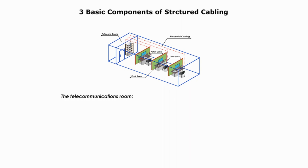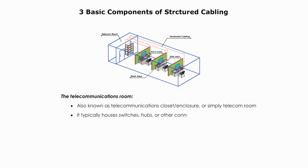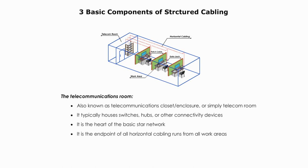Telecommunications Room is also known as telecommunications closet or enclosure, or simply telecom room. It typically houses switches, hubs, or other connectivity devices. It is the heart of the basic star network. It is the endpoint of all horizontal cabling runs from all work areas. It also provides cross-connection to other equipment rooms such as IDF or another telecom room.